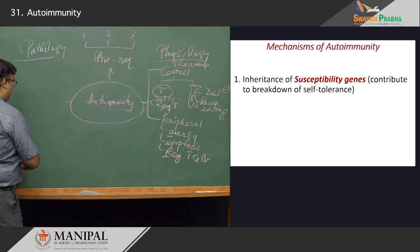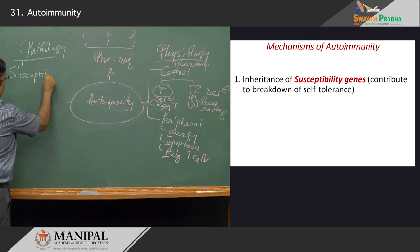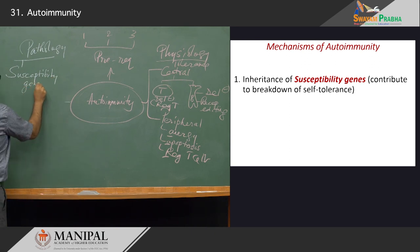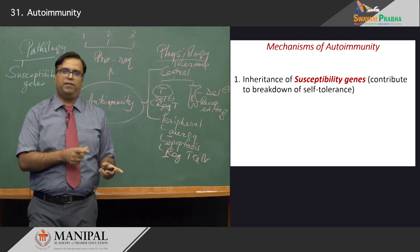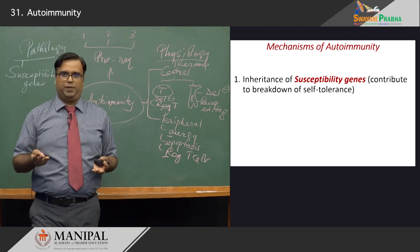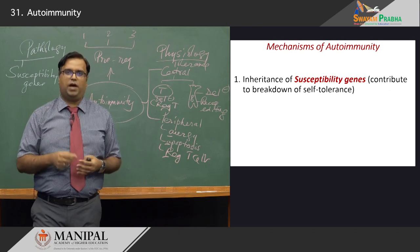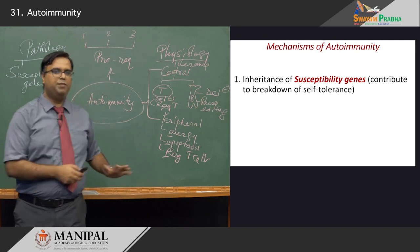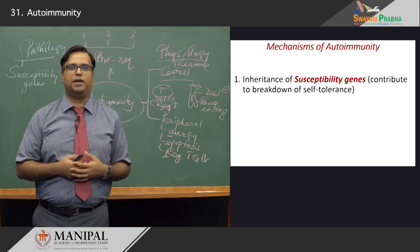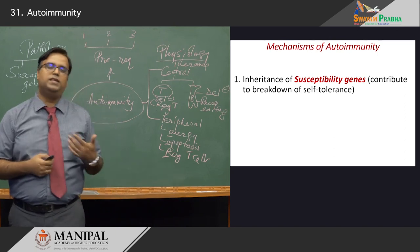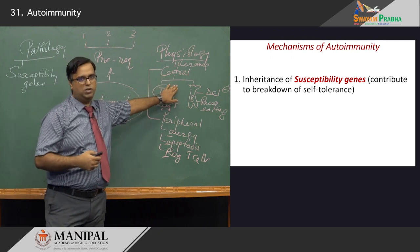The first mechanism is the inheritance of what are called susceptibility genes. Certain individuals are more prone to develop a disorder than others. Because there is always a susceptibility due to some change in the genes, these people become more prone to develop autoimmune disorders. What do these susceptibility genes do? Effectively, they contribute to the breakdown of immunological tolerance, breaking it down at different stages and resulting in lymphocyte activation.